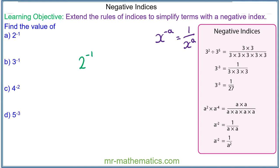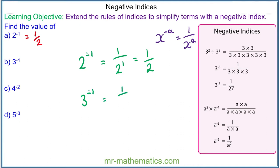The negative power means it is 1 divided by 2 to the power of 1. 2 to the power of 1 is 2, so it simplifies to make one half. Question b: we have 3 to the power of negative 1. The negative power means this is 1 over 3 to the 1.